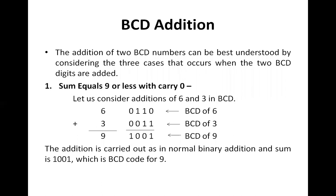There are three cases we have to go through before writing the program, because these are the three cases that govern correct BCD addition programming. The first case is when we add two BCD numbers and find the sum is equal to nine or less than nine and carry is not generated. BCD numbers range from zero to nine; all combinations beyond that are invalid.